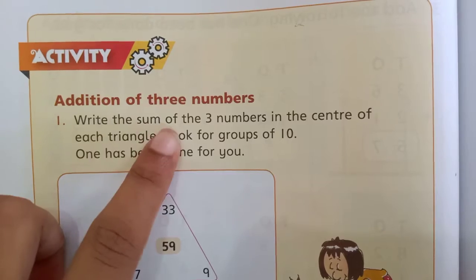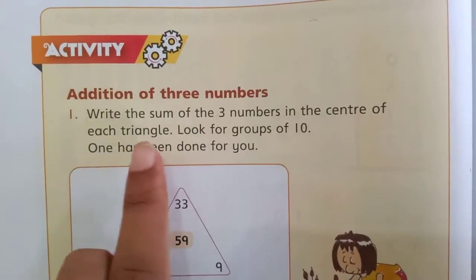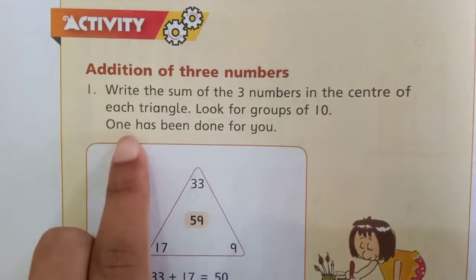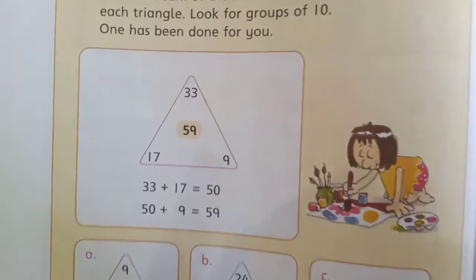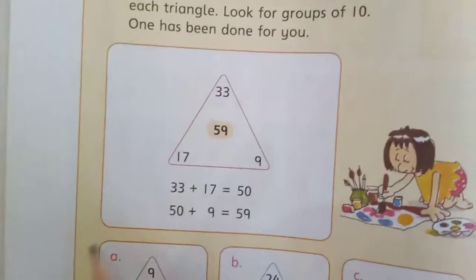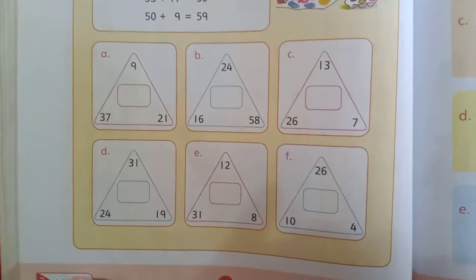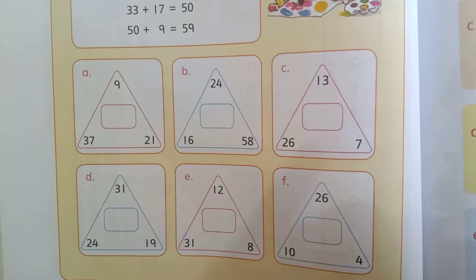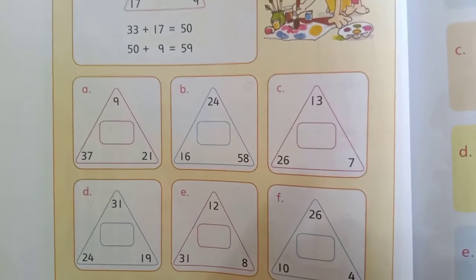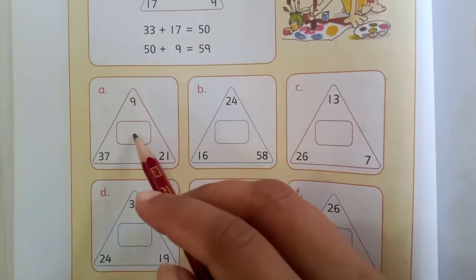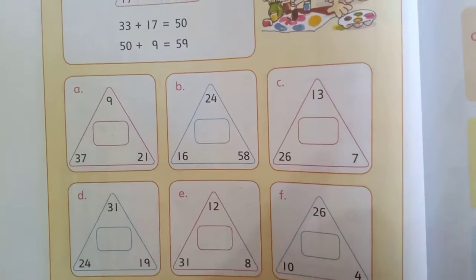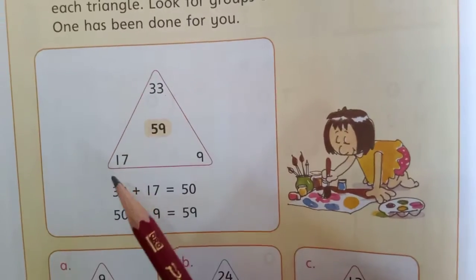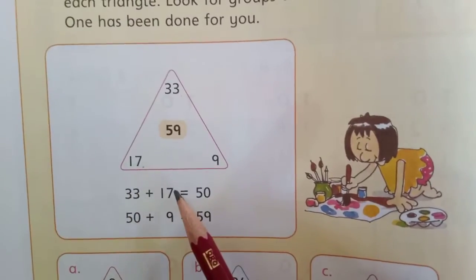Write the sum of 3 numbers in the center of each triangle. Look for groups of 10. One has been done for you. Now what do you need to do? Addition of 3 numbers. Here you can see six triangles given, A to F. Here you have numbers given. What do you need to do? Add, and you have to write the answer in the center of the block.